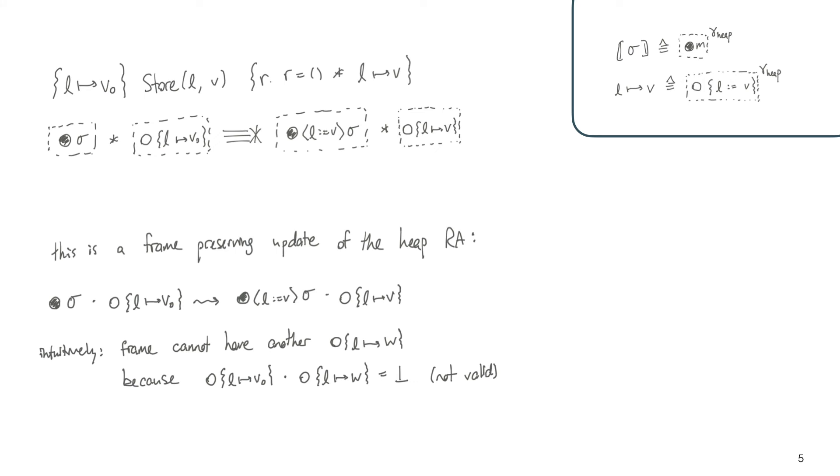Due to the design of this resource algebra, this is a frame-preserving update of the heap RA, and so we can directly construct this view shift. Intuitively, the reason why this view shift holds, or why this frame-preserving update holds, is because the frame can't have another element that maps L to any other value, because that combination is invalid. And therefore, as long as we have both the authoritative and the fragment, and a fragment corresponding to L, we can update the value at L to anything else.